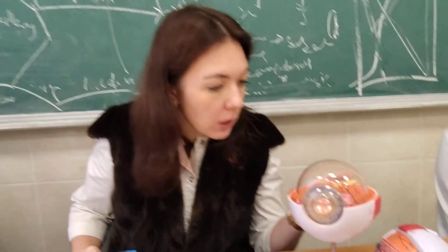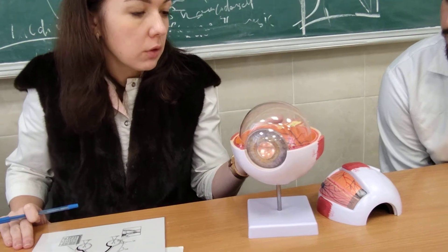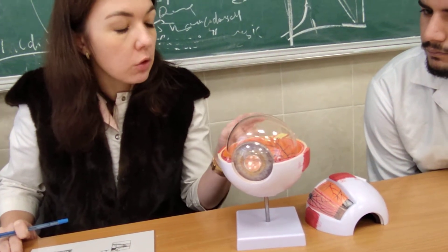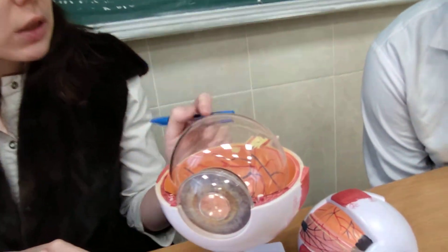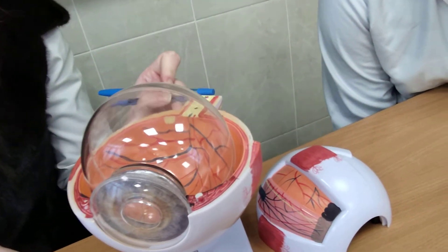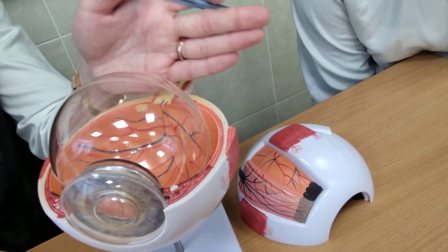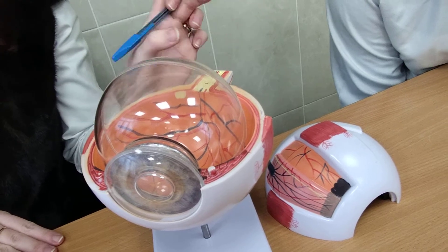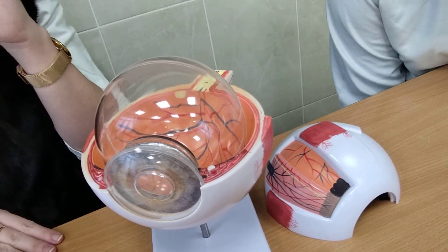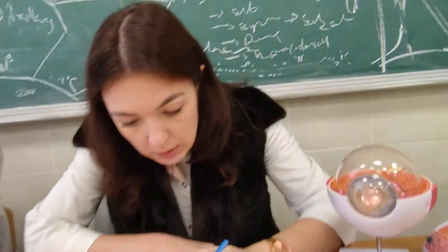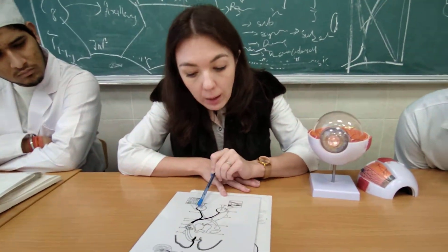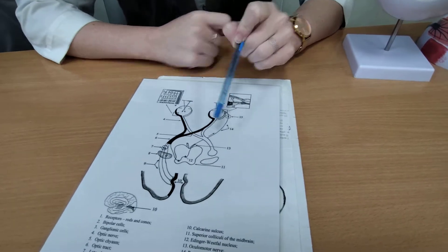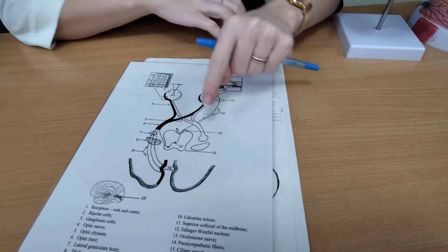You also have to study the structure of the optic nerve — it's very simple. There are several parts: the intraocular part inside the eyeball; the intraorbital part, from the posterior pole of the eyeball to the entrance into the optic canal; the intracanalicular part inside the optic canal; and then the intracranial part. The optic nerve lasts up to the optic chiasm. After the optic chiasm, it becomes the optic tract.